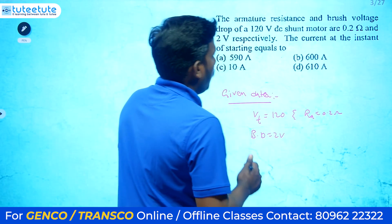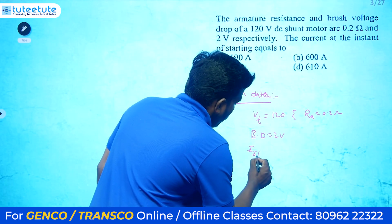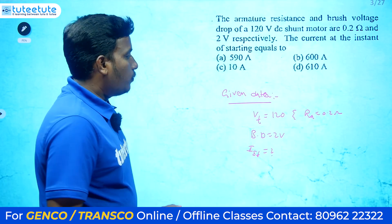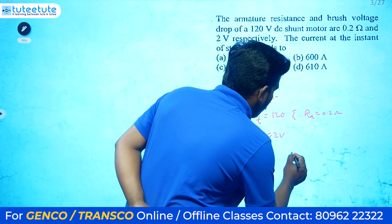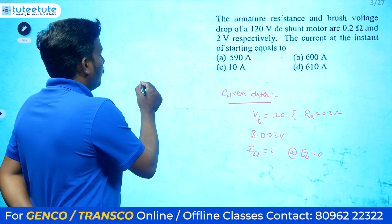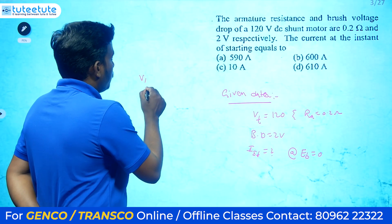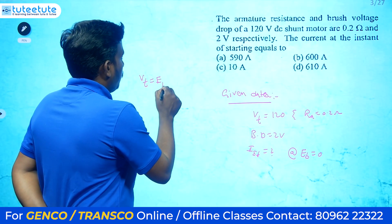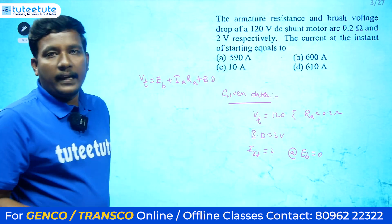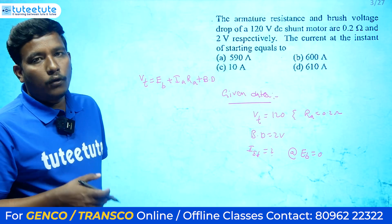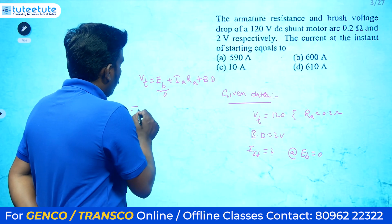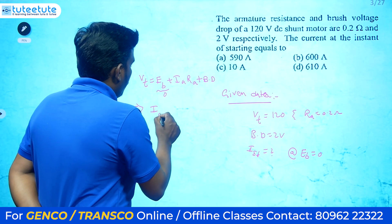They are asking for the starting current. We know that at the time of starting, Eb = 0. Writing the KVL equation for a motor: Vt = Eb + Ia·Ra + brush drop. Normally brush drop is neglected, but when it is mentioned in the question we need to include it in our equation. At the time of starting, Eb = 0.